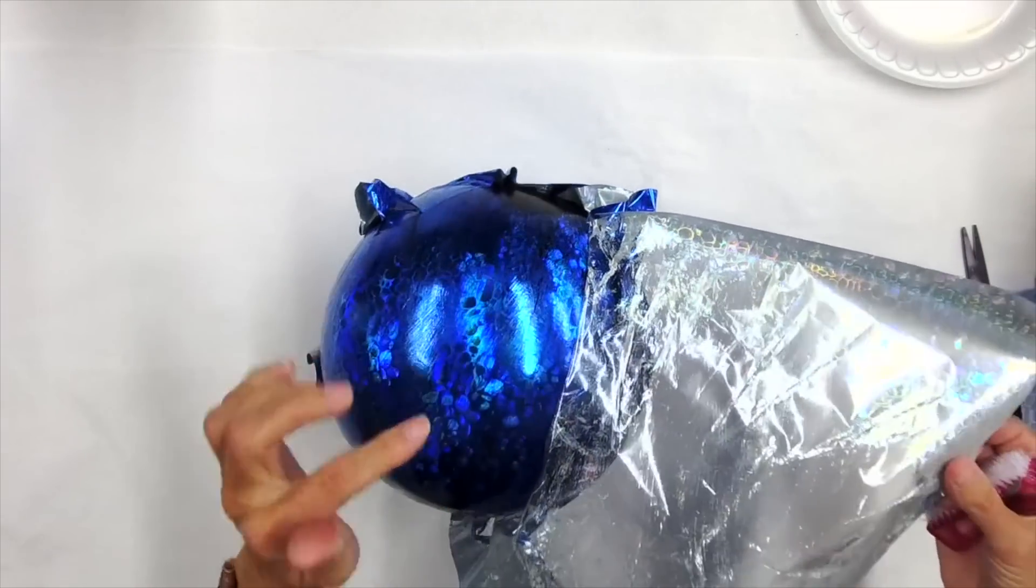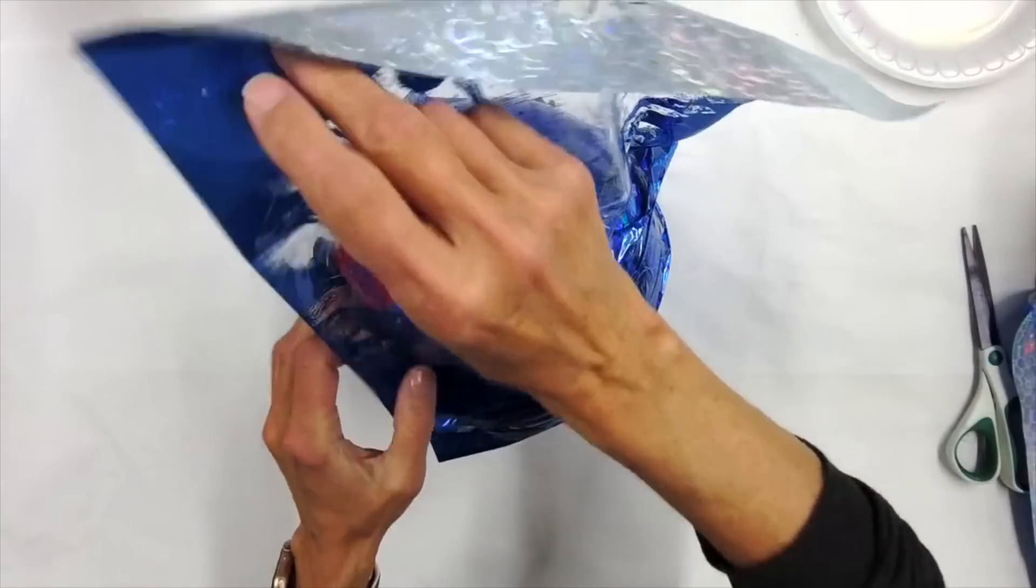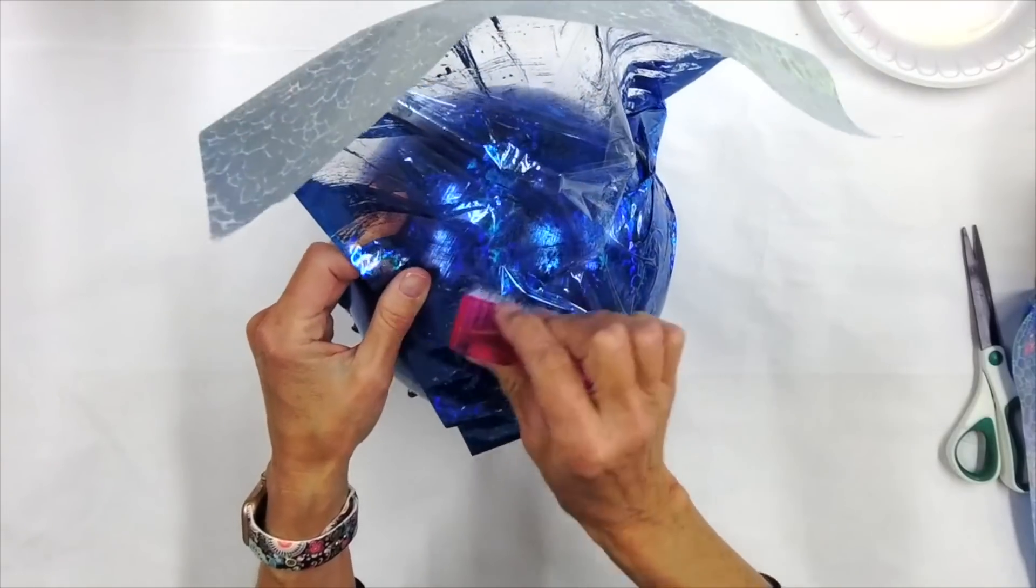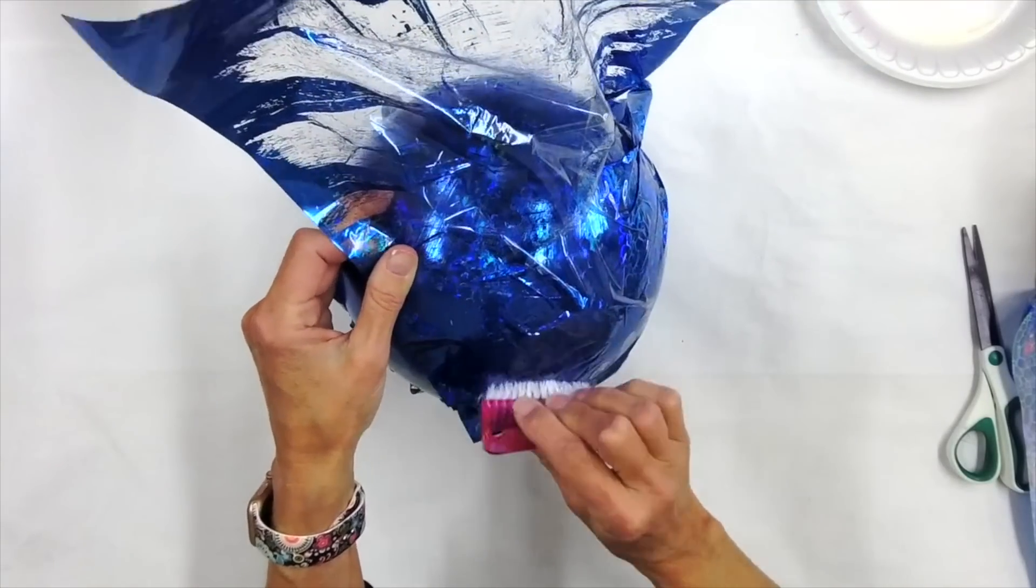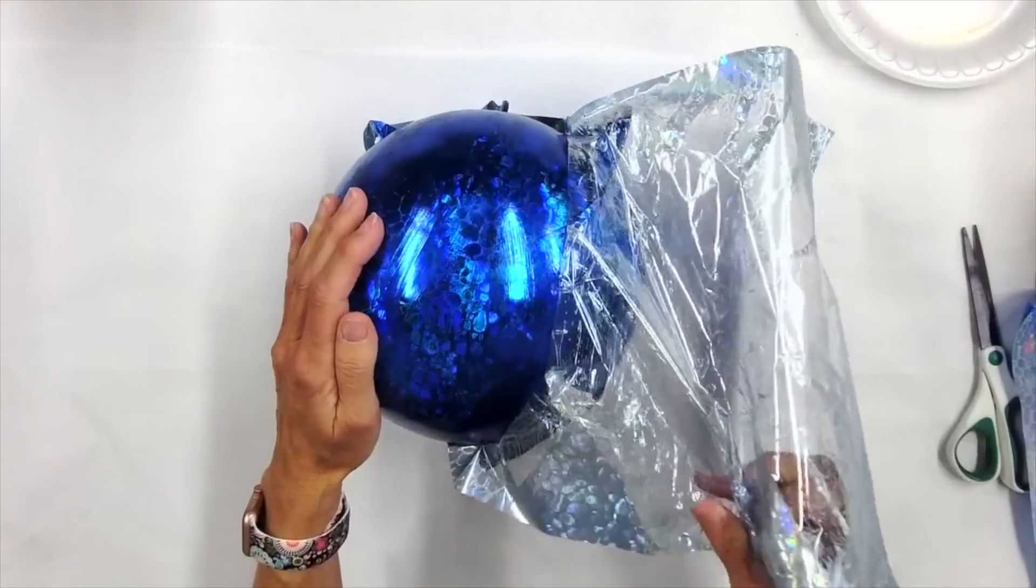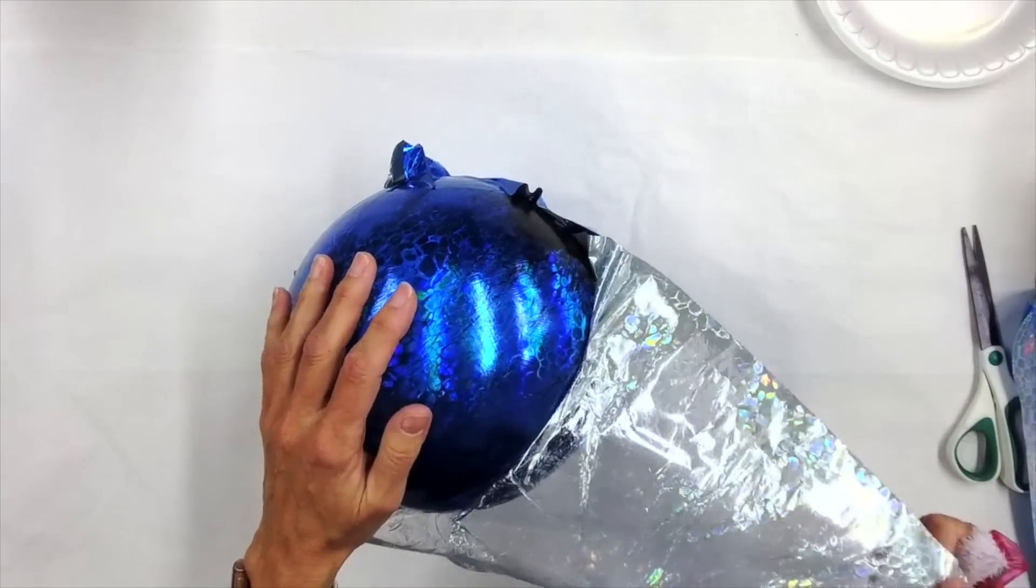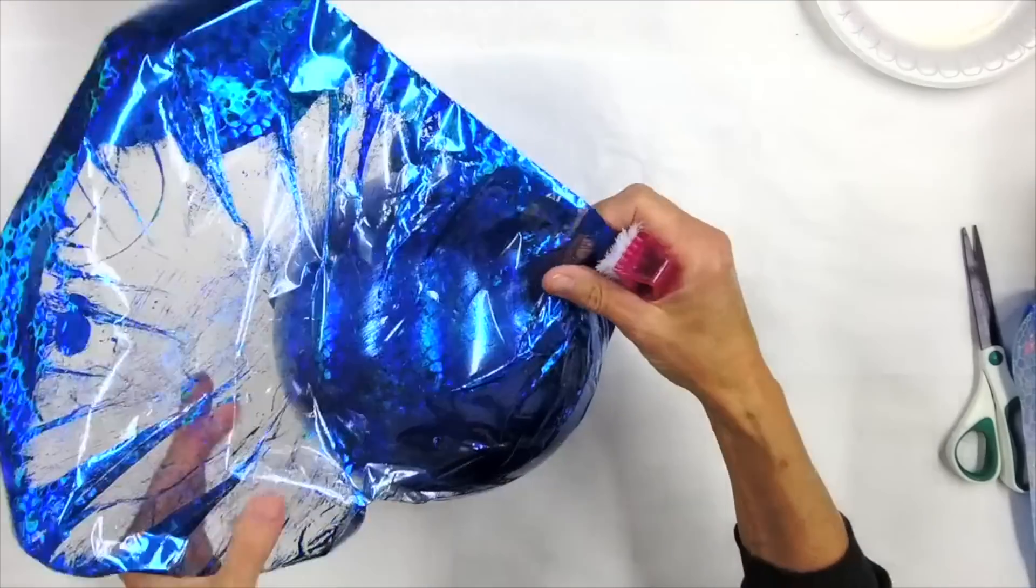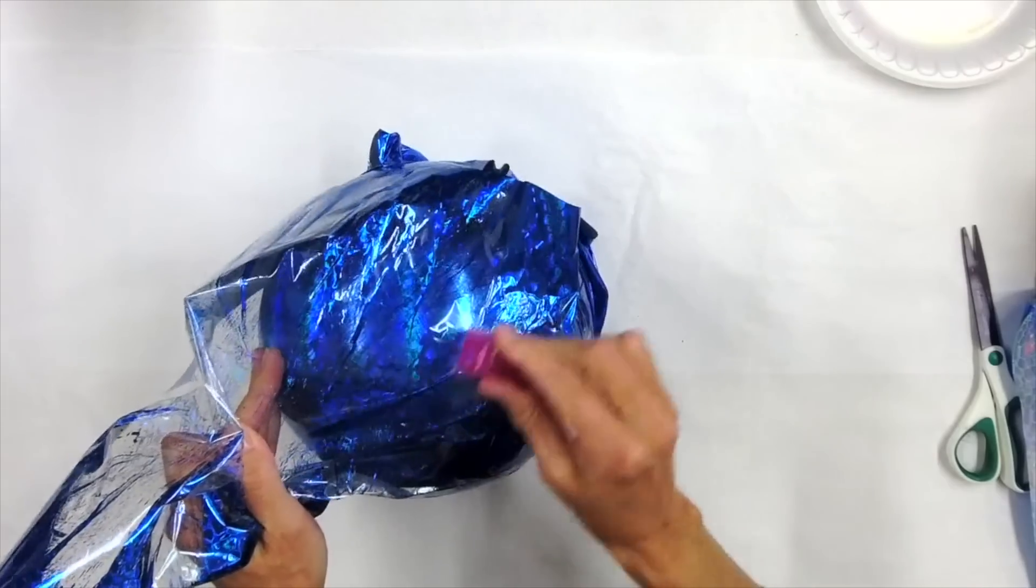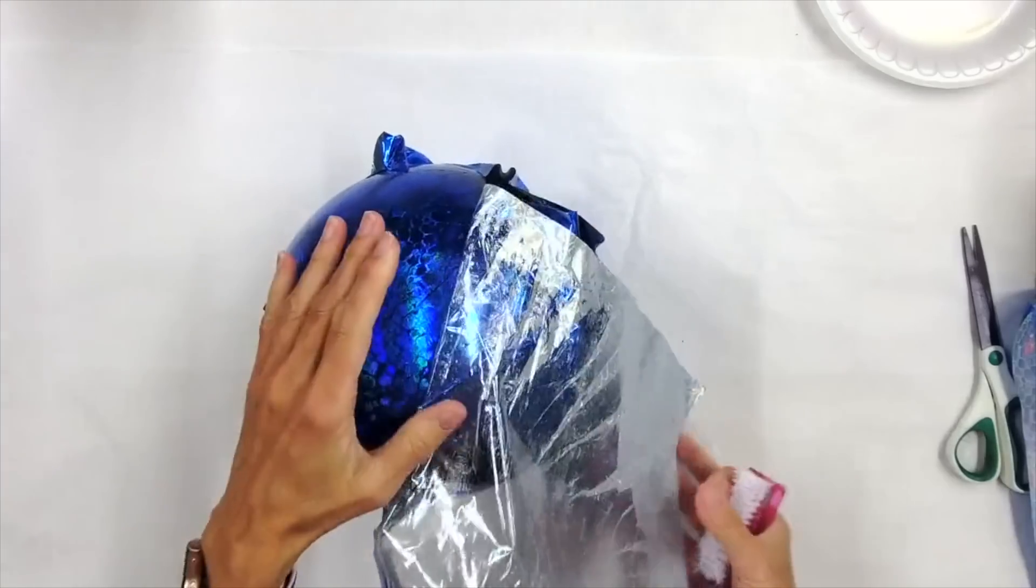Now, I went over black on purpose because I knew if there was a little black peeking through this foil, it wasn't going to take away from the design or the color. Black normally will hide a lot of imperfections, especially with such a dark foil color that we are using because this is the blue pebbles. Pebbles comes in blue and bronze, so there is a couple of choices.